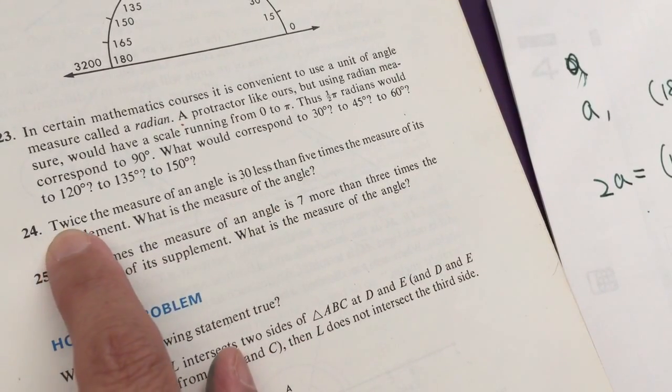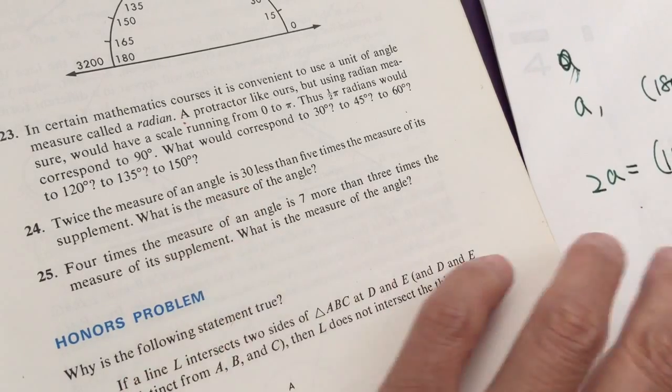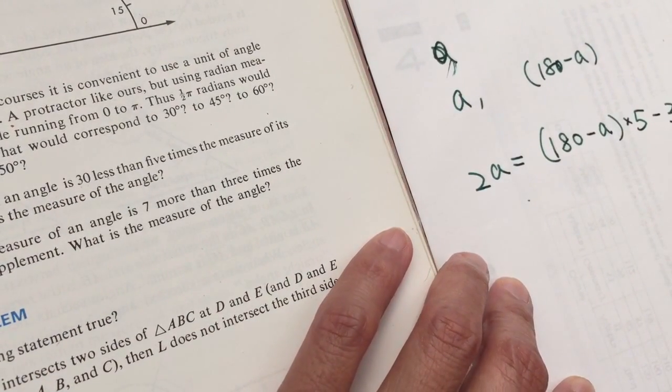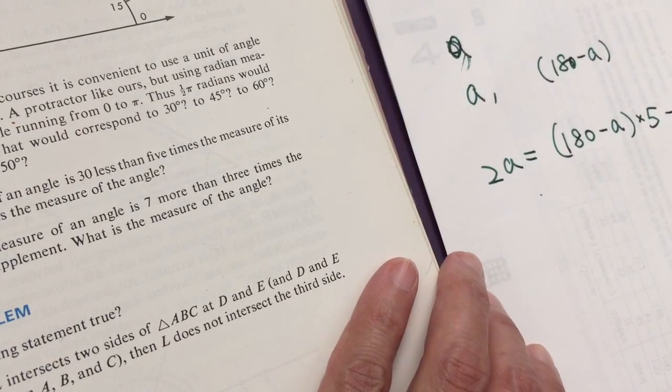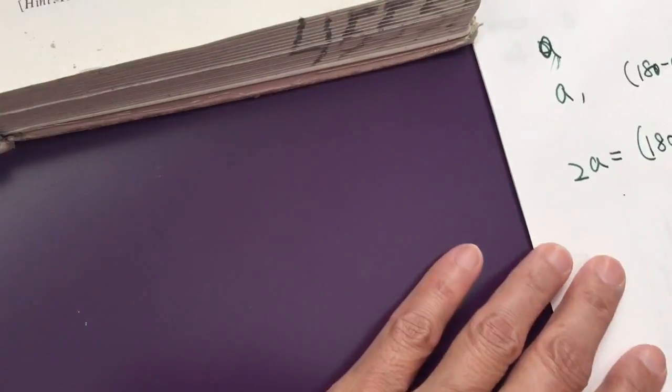And twice the measure of angle A is 30 less. So you have to subtract 30. That is the equation we establish, or the function we establish, so that we can solve the problem.